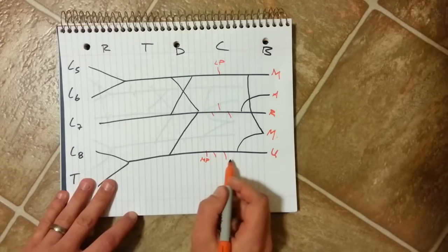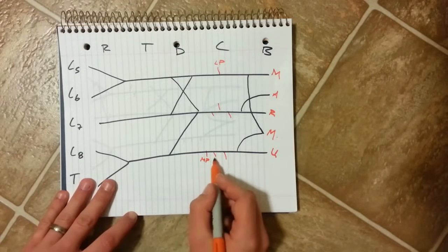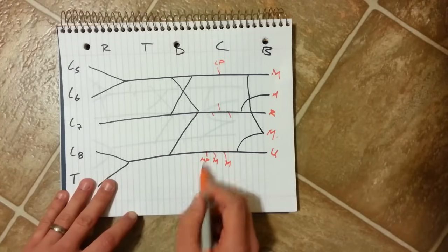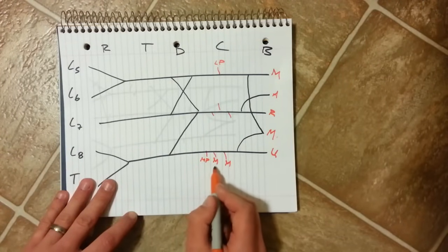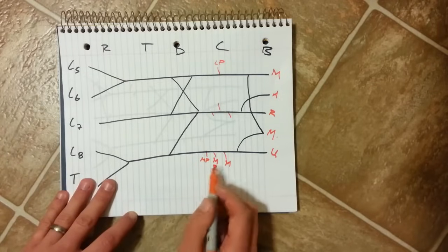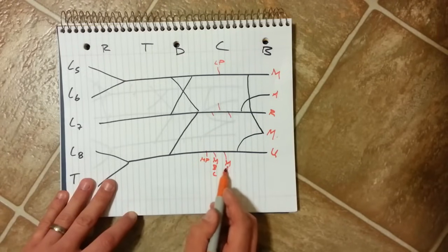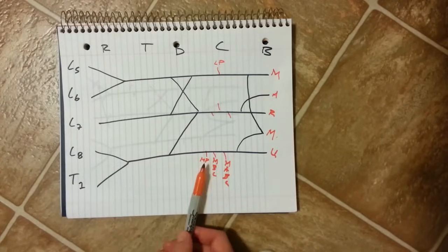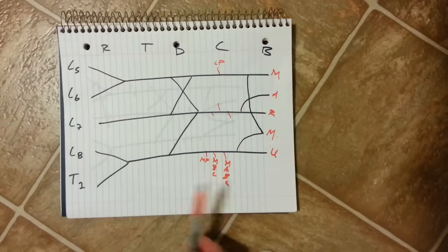And this three down here is easy to memorize because they all start with M. As I said this is the medial pectoral. Next one is the medial brachial cutaneous. The last one is medial antebrachial cutaneous. This is easy to memorize because it goes M plus one letter, M plus two letters, and M plus three letters.